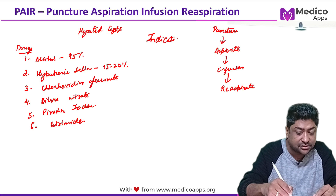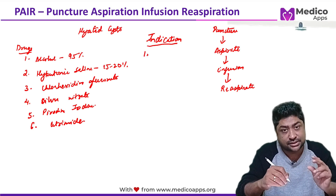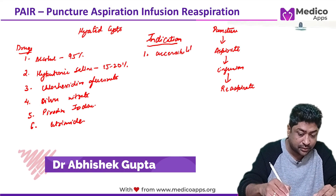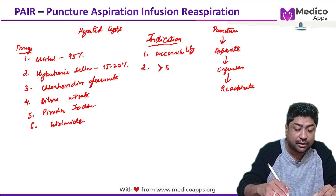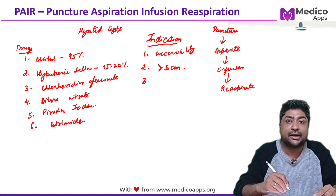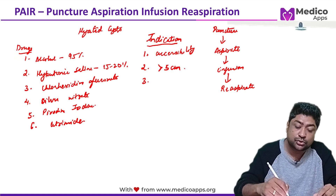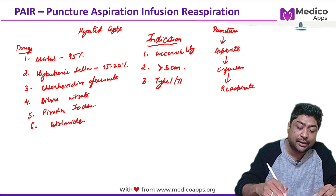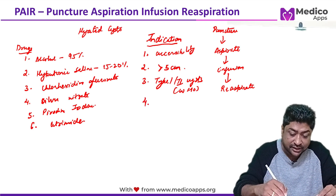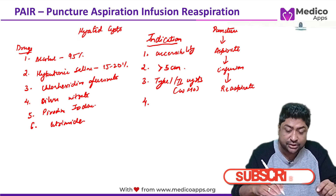The indications for PAIR are: the cyst should be accessible for puncture, the size should be more than 5 centimeters, and the cyst should not have multiple septations, as that would reduce outcomes. Classically, WHO type 1 or type 2 cysts are the ones for which we should go for PAIR.